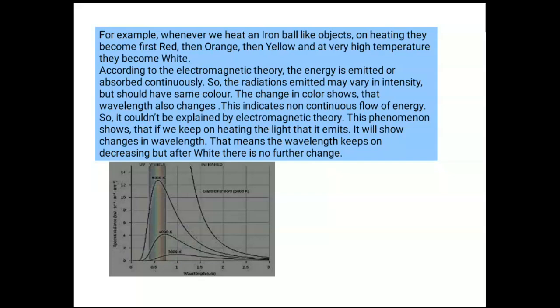Look at the graph here. This is an intensity versus wavelength graph, and the graph is in the form of a bell-shaped curve. With the increase in wavelength, the intensity of radiation is increasing, then it becomes maximum, then further it starts decreasing. As the temperature increases, the intensity of the radiation also increases.